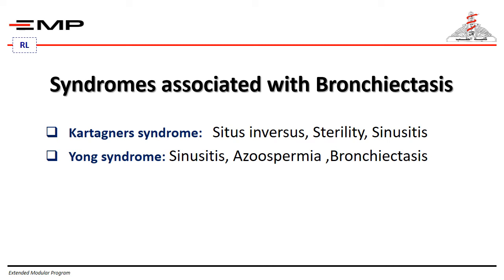Remember, there are syndromes associated with bronchiectasis. What's called Kartagener syndrome — it is bronchiectasis with situs inversus totalis, where the liver is on the left side, the heart on the right side, and the spleen and stomach on the right side, along with sinusitis. And what's called Young syndrome, which involves sinusitis, azoospermia, and bronchiectasis.